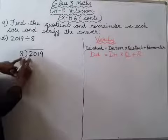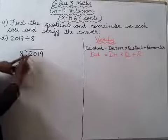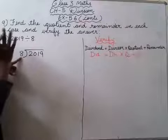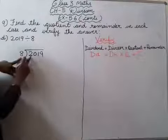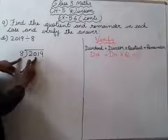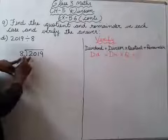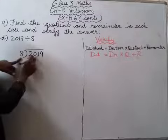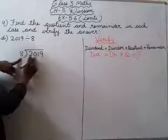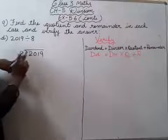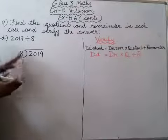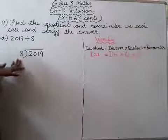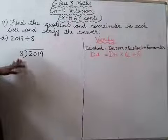So 8 se chota number hai. To 8 se chota number hai, to hum nahi le sakti hai. So next number uske saath leena padega. You have to take the next number also — 2-digit number aapko leena padega, 20. 8 table mein 20 aayega nahi aayega. To isse kam number aap le sakti hai. 8 ones are 8, 8 twos are 16, 8 threes are 24.